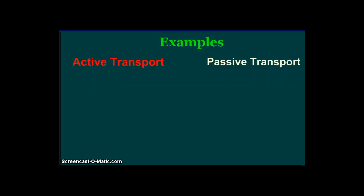You will need to be familiar with the examples of each — the examples of active transport and the examples of passive transport. Passive transport happens in two ways: simple diffusion, in which molecules move from an area of high concentration to a low concentration, which if you recall from diffusion and osmosis does not require energy.